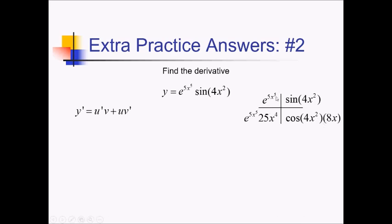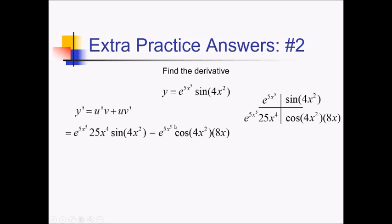Using the ribbon to put it all together, I've got e to the 5x to the 5th times 25x to the 4th, times sine of 4x squared — that's all u'v right there. Plus e to the 5x to the 5th times cosine of 4x squared times 8x. And that should be a plus in there because this is product rule, not quotient rule.